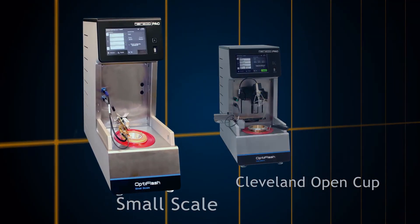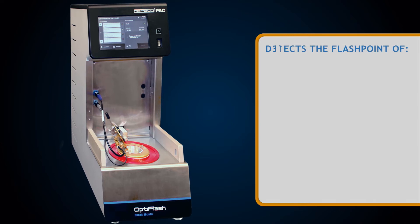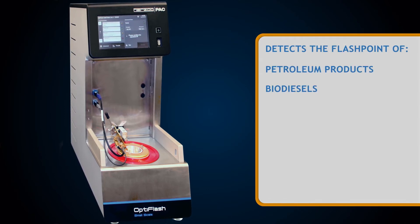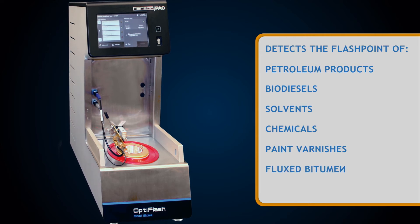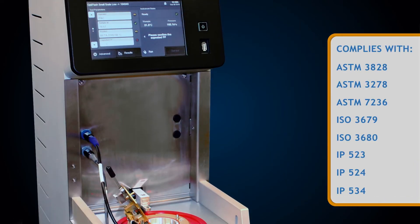The OptiFlash Small Scale model accurately detects a flashpoint of petroleum products, biodiesels, solvents, chemicals, paint varnishes, flux-pitamin, food and beverages. It complies with the following standards.